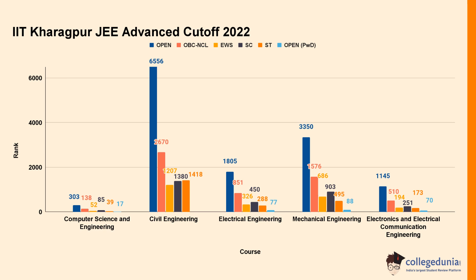For Electrical Engineering at IIT Kharagpur in 2022, cut-off rank was 1805 for Open category, 851 for OBC-NCL, 326 for EWS, and 450 for SC. For Mechanical Engineering, cut-off rank was 3350 for Open category, 1576 for OBC-NCL, 686 for EWS, and 903 for SC. For Electronics and Electrical Engineering, cut-off rank was 1145 for Open category, 510 for OBC-NCL, 194 for EWS, and 251 for SC.